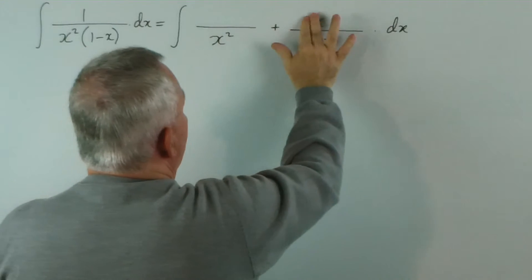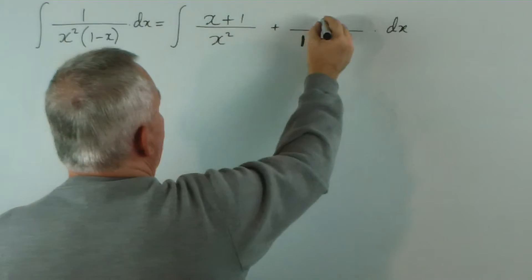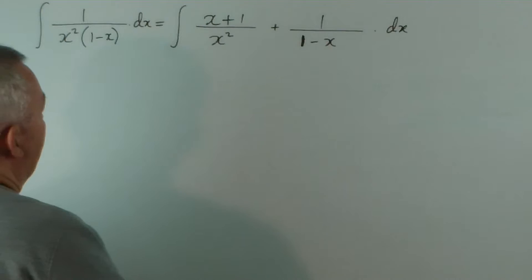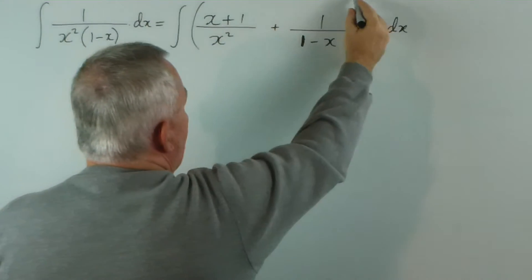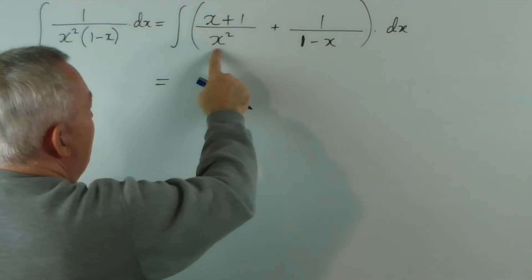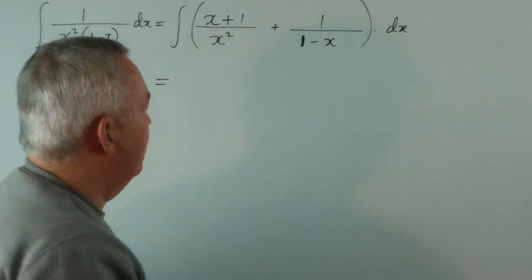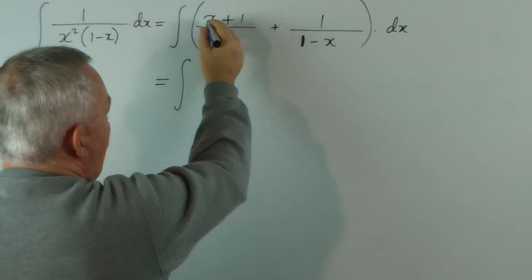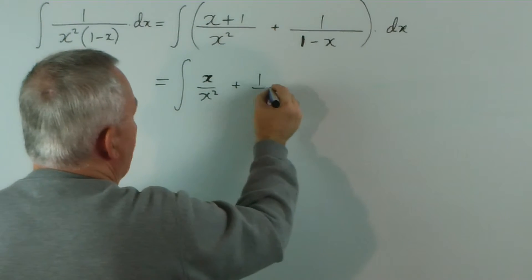So, now I know that I have 1x plus 1 and 1 over here. That's all I need. Now, how do we handle these two parts? This one, because I have a binomial on the top and a simple x squared on the bottom, I would separate that into two. So, I have x over x squared and 1 over x squared.